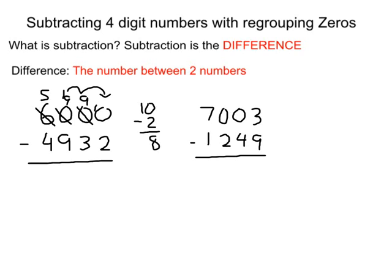So now we do 10 minus 2. We have 8. And now we can treat the middle two zeros as nines. So we go 9 minus 3, and we have 6. 9 minus 9 is 0. And 5 minus 4 is 1. So we get a final answer of 1,068.